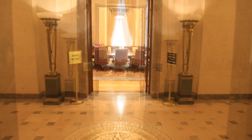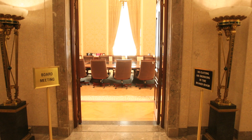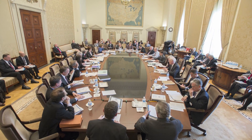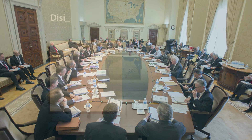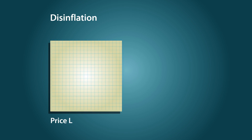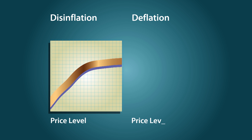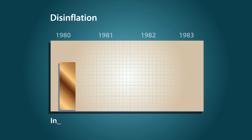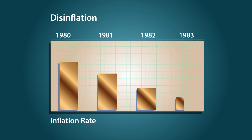Since too much inflation is bad for the economy and deflation is also bad, one of the Fed's main goals is to keep inflation low and stable while avoiding deflation. A related term is disinflation — that means a slowing of the rate at which prices are increasing, in other words, a decrease in the inflation rate. It's not the same as deflation, when prices are actually decreasing. For example, disinflation occurred from 1980 to 1983, when the inflation rate went from over 13% to under 4%.